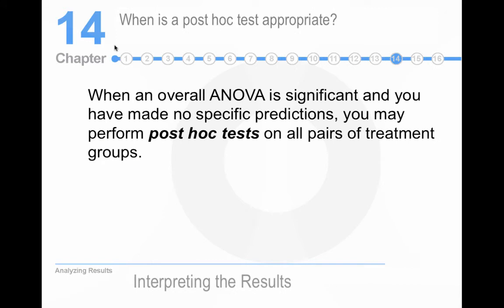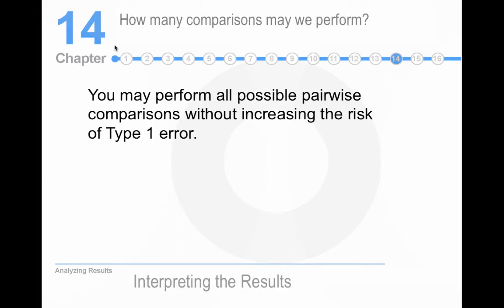What's a post-hoc test and when is it appropriate? Well, if you've made no specific predictions, you can perform post-hoc tests. So you could use the Tukey HSD, which HSD stands for Honest Significant Difference Test. Or you could do a Bonferroni test. I love Chef Boyardee. I love his pasta in a can, if you've ever had that. How many comparisons can we perform? Well, all possible pairwise comparisons and you don't increase the risk of a type 1 error by doing that. So live it up.